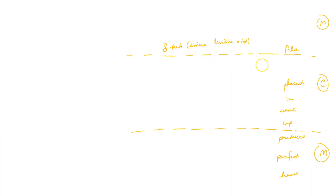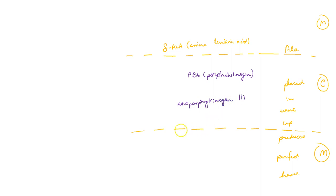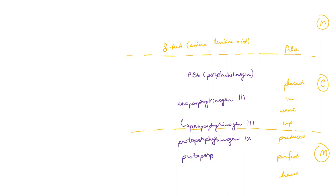The second intermediate is porphobilinogen, which forms uroporphyrinogen 3, which then forms coproporphyrinogen 3, which then forms protoporphyrinogen 9, which forms protoporphyrin, which incorporates iron into the protoporphyrin ring to form heme.